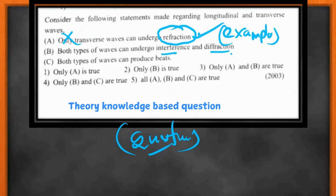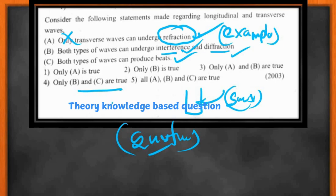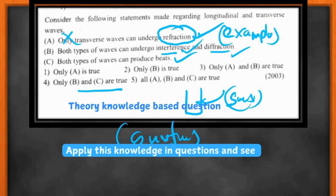Both types of waves can undergo interference and diffraction — diffraction is a general wave property, and interference produces standing waves from both transverse and longitudinal waves — so that statement is correct. Both types of waves can also produce beats — we find beat equations from sound and from strings — so that is also correct. The answer is BC. Sometimes you need your prior practice and knowledge of examples rather than equations. The basic method is to find the equation; if not, think of examples. Practice this and you'll be able to do statement questions like a pro.